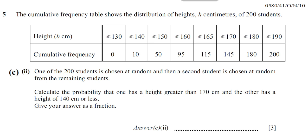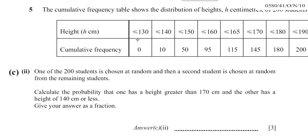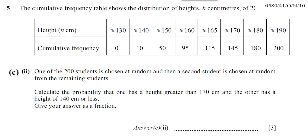This is question number five from October/November 2010, paper for variant one. It's part C, part two of the question, and it involves mixing probability with cumulative frequency diagrams.